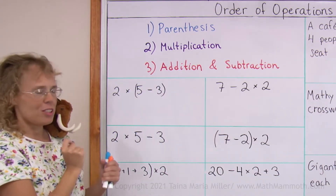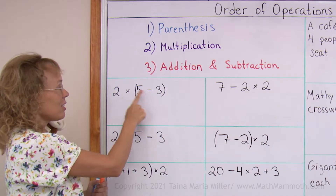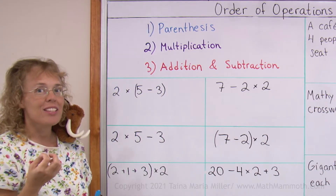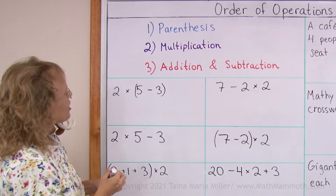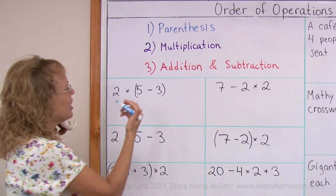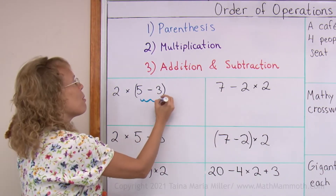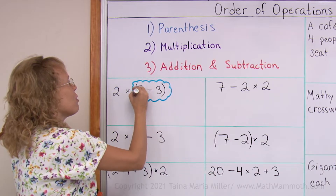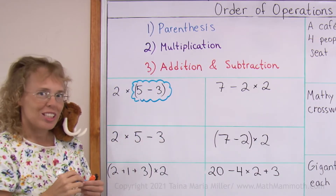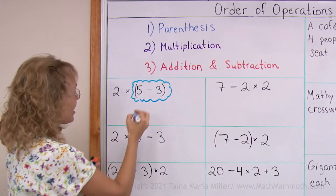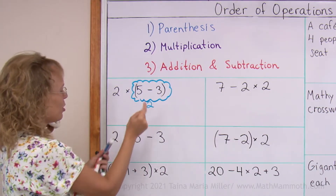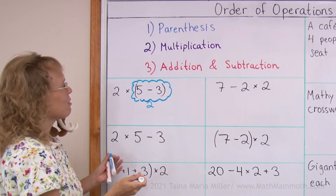So what do we solve first — this or that? Clearly what is within parentheses gets solved first, and you can make it fun if you make a bubble or a cloud or a balloon around that which gets solved first. 5 minus 3 equals 2, and then 2 times 2 makes 4.